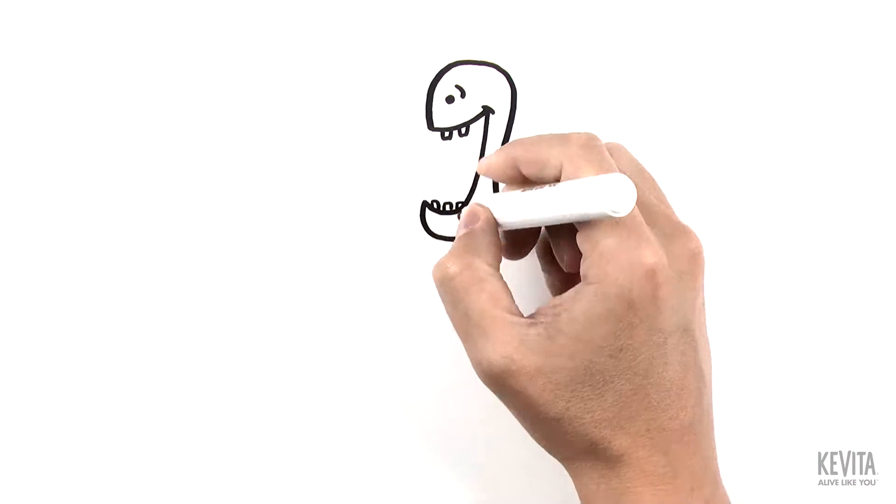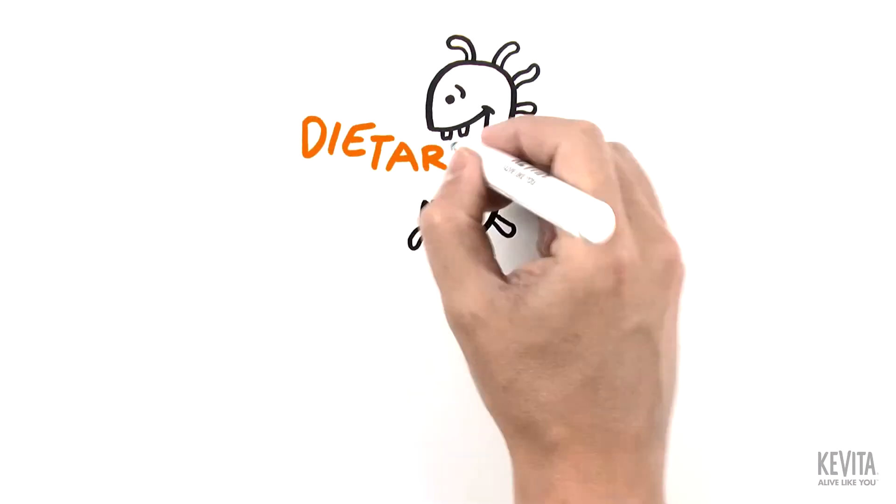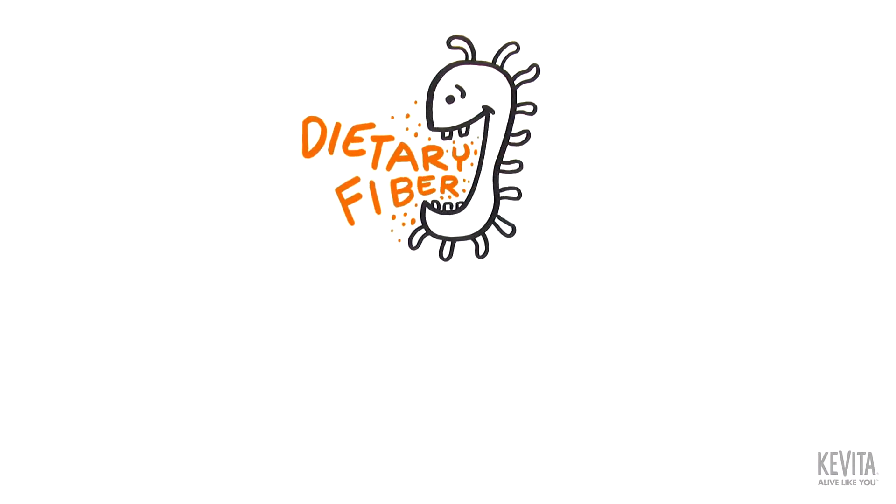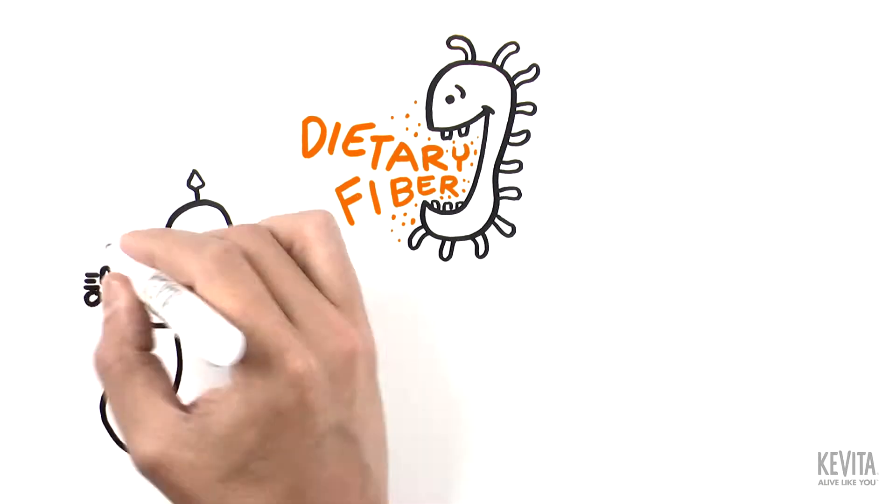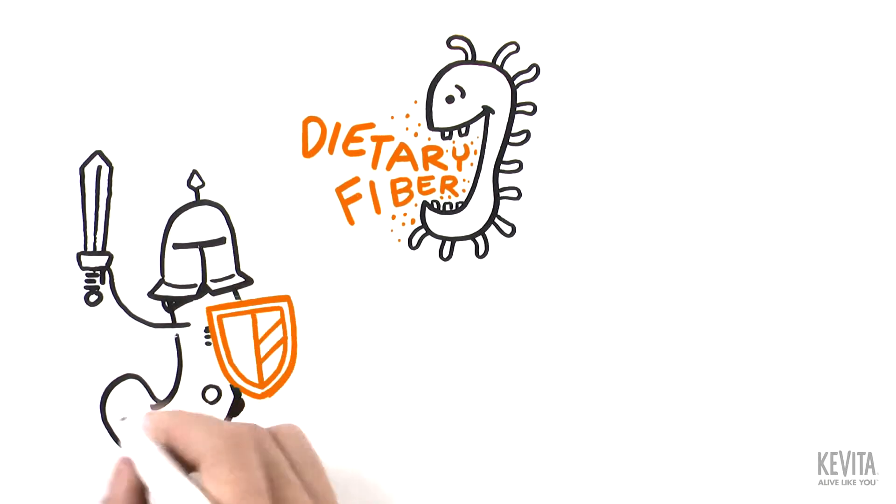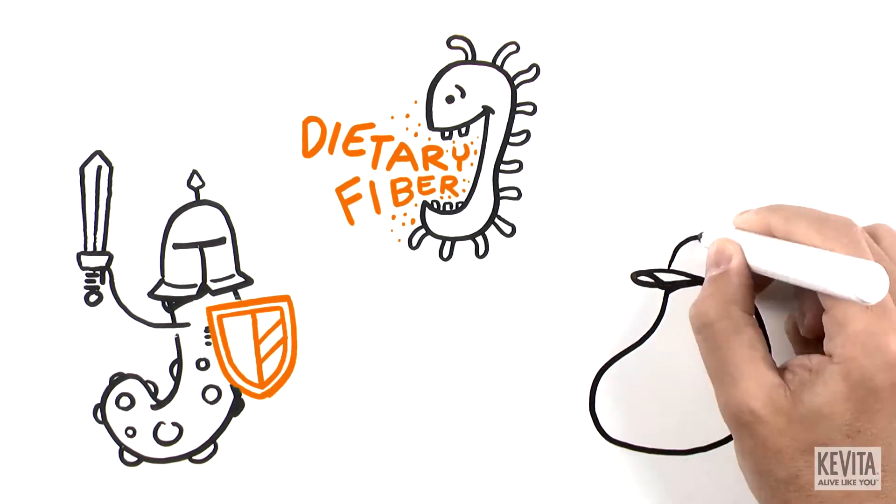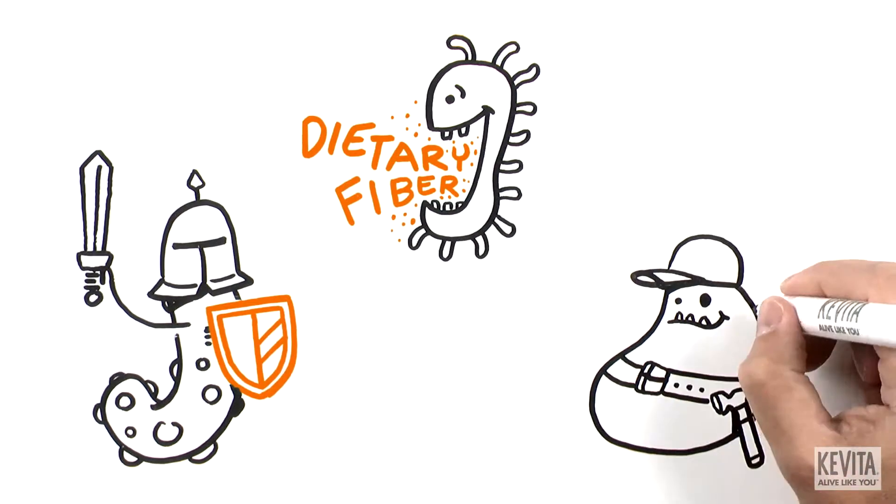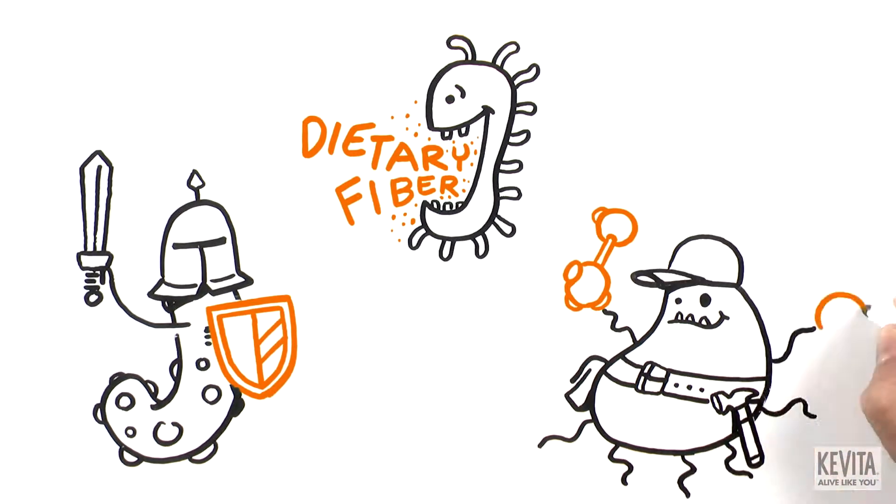These bacteria in the gut are responsible for partially digesting dietary fiber, protecting us from colonization of pathogenic or bad bacteria, and producing short-chain fatty acids that intestinal cells use to stay healthy.